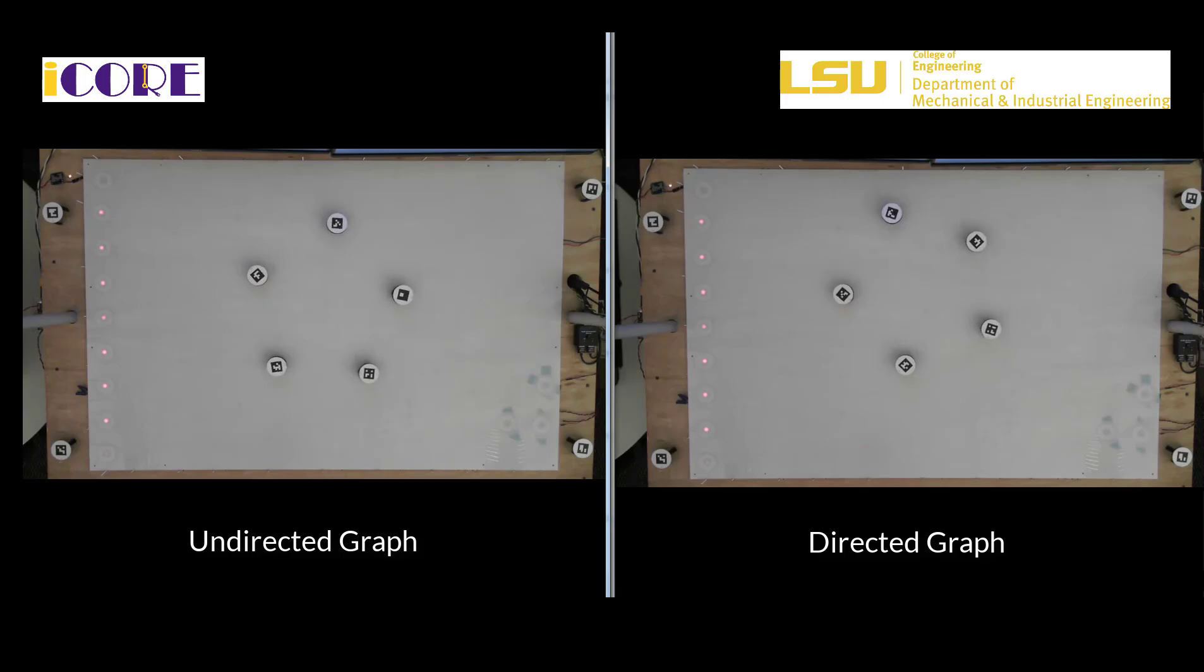Because in the undirected case, for the stabilizing of each edge to the desired distance, both agents or both robots are responsible to control the link. However, for the directed one, only one agent is responsible to do so.